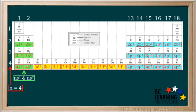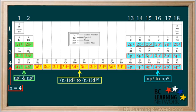If n is the number of the period, then the s orbitals of that period are ns1 and ns2. And the p orbitals of the period are np1 to np6. But the d orbitals of the period are n minus 1, d1, to n minus 1, d10. In other words, the s and p orbitals are the same as the period number, 4s's and 4p's in period 4. But the d orbitals are one less than the period number, 3d's in period 4.